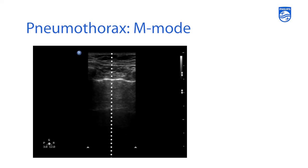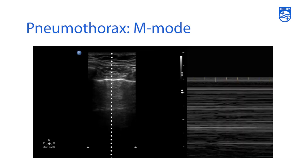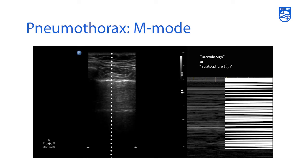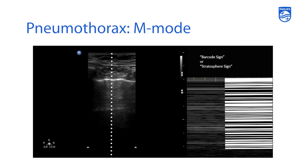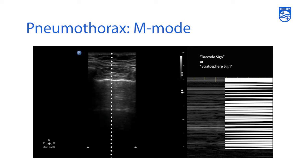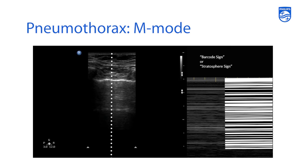If you put M-mode over the area where you didn't think there was lung sliding, you would see an image that looks like there is stasis. This is what we call the barcode sign or stratosphere sign, where you really don't see that to-and-fro motion and smudging artifact in the lower portion of your M-mode image. Instead, you get this very static appearance of the entire M-mode, which means there really isn't motion. This is something you see in a patient who has a pneumothorax.